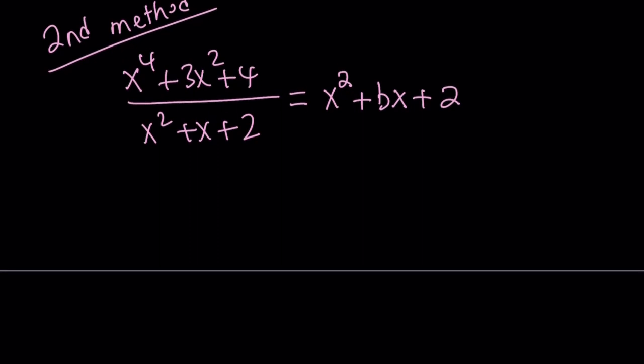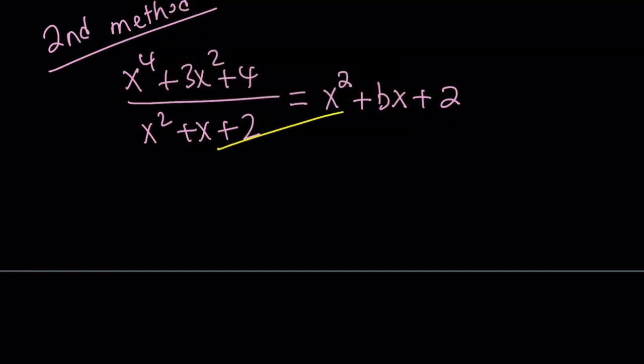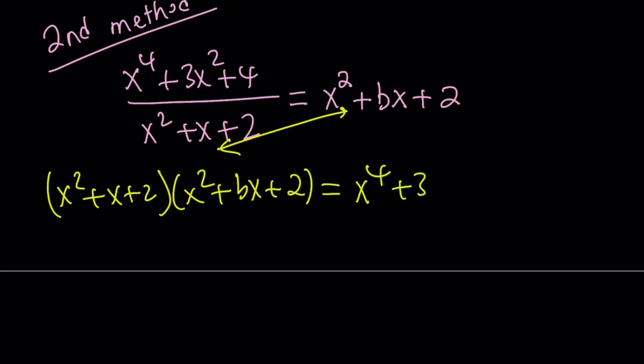Great. Now we're going to go ahead and cross-multiply these two. And let's see what we get from here. x squared plus x plus 2 multiplied by x squared plus bx plus 2 is supposed to equal x to the 4th plus 3x squared plus 4.